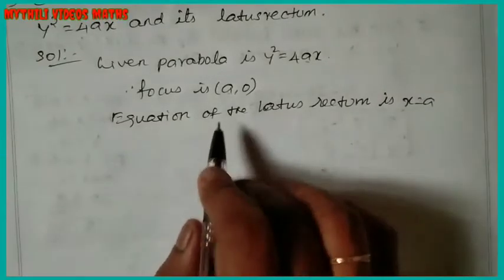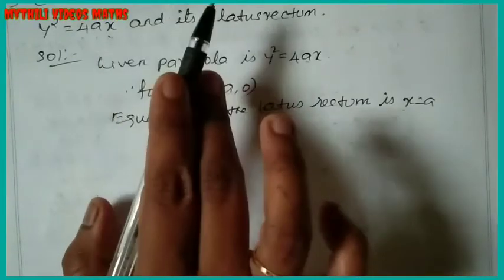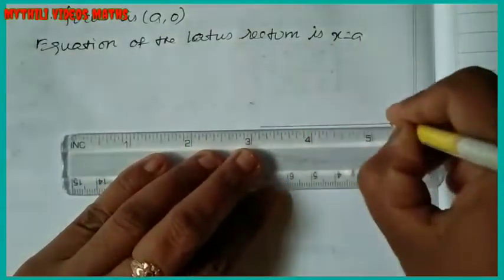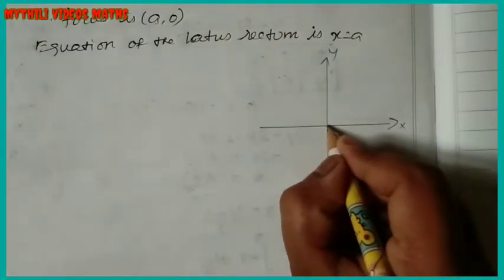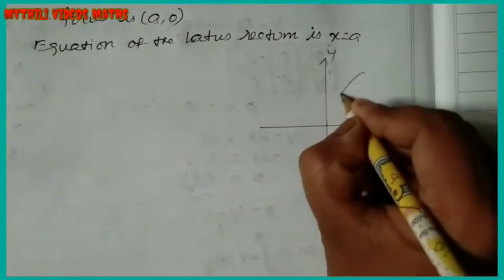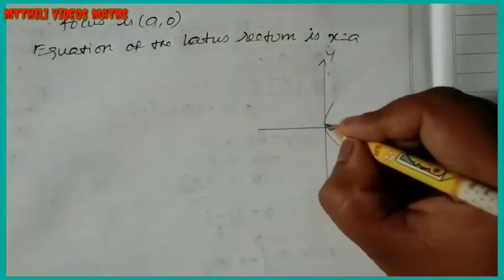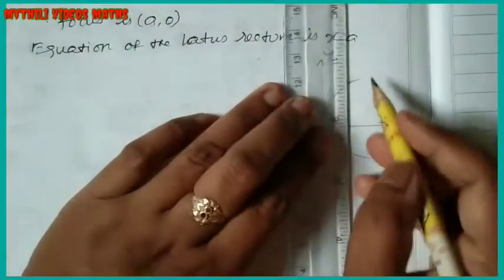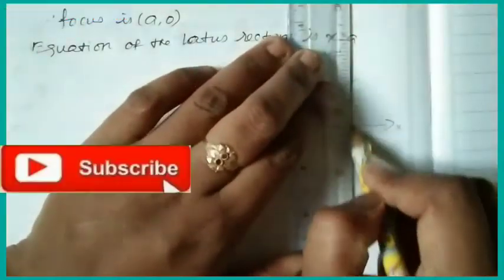Now we draw the diagram. We draw the x-axis and the y-axis. The point (a, 0) is marked on the x-axis, and the line x = a is the latus rectum. We have to see the area in this setup.